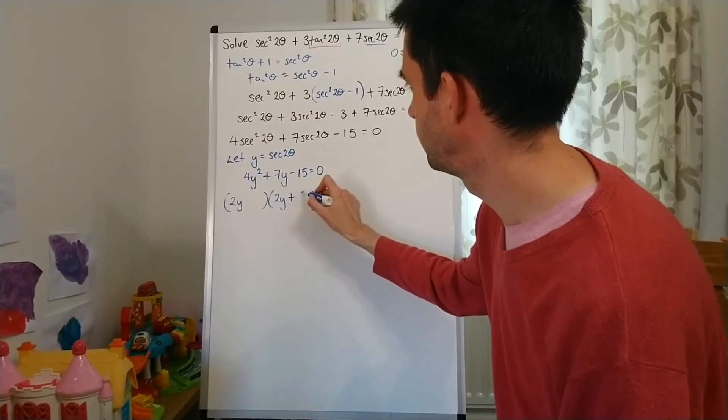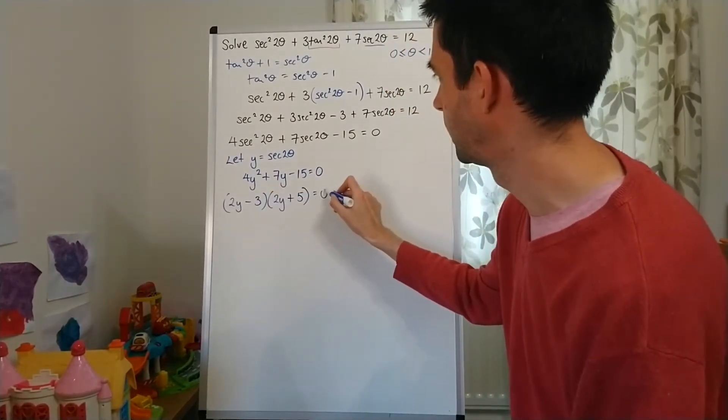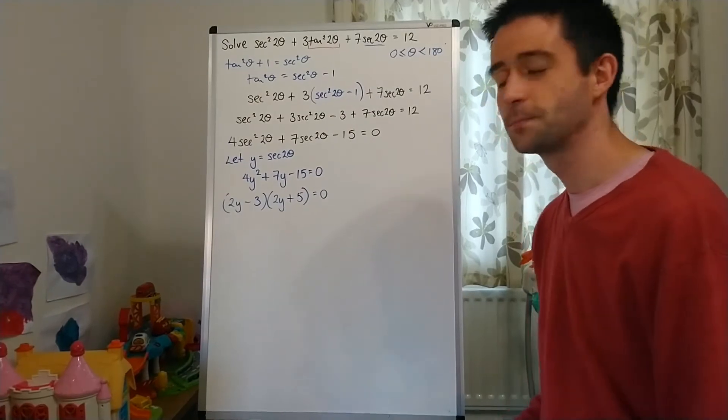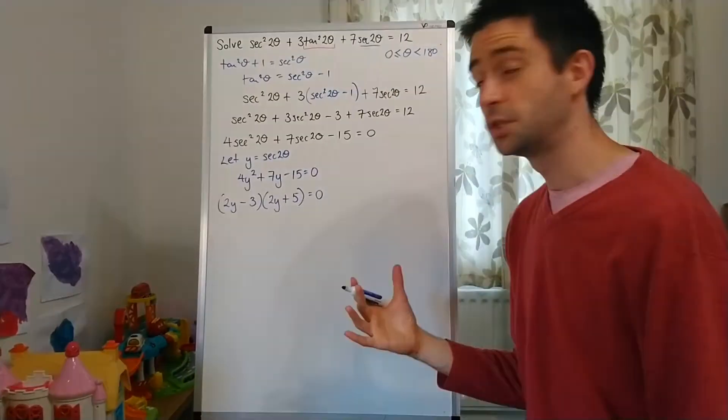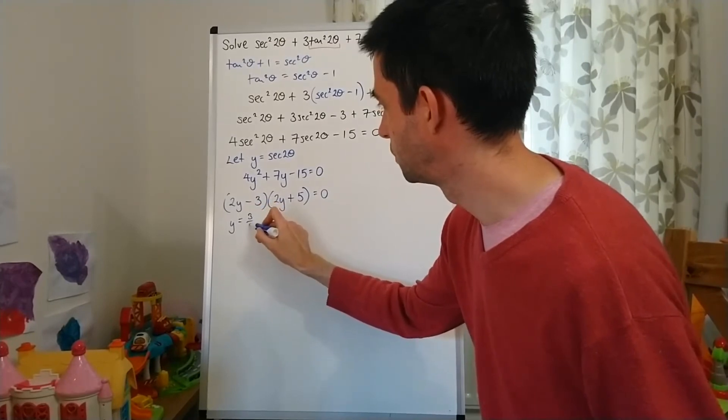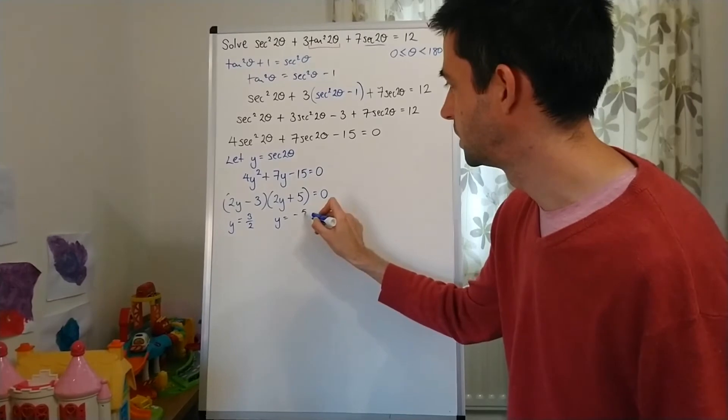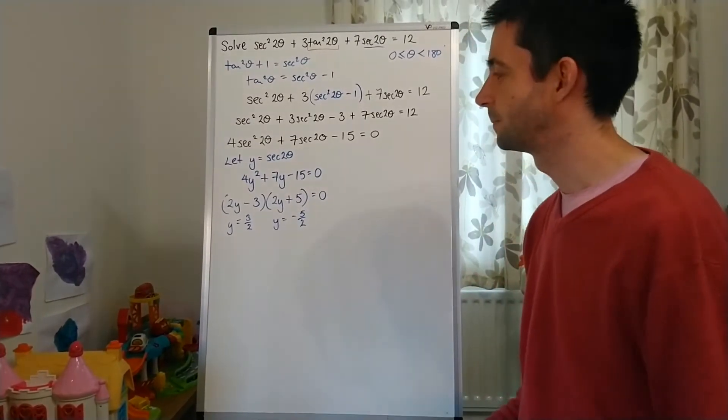So, +5 in that bracket and -3 in that bracket = 0, which is going to give me two solutions for y. The first one is y = 3/2, and the other one is y = -5/2.